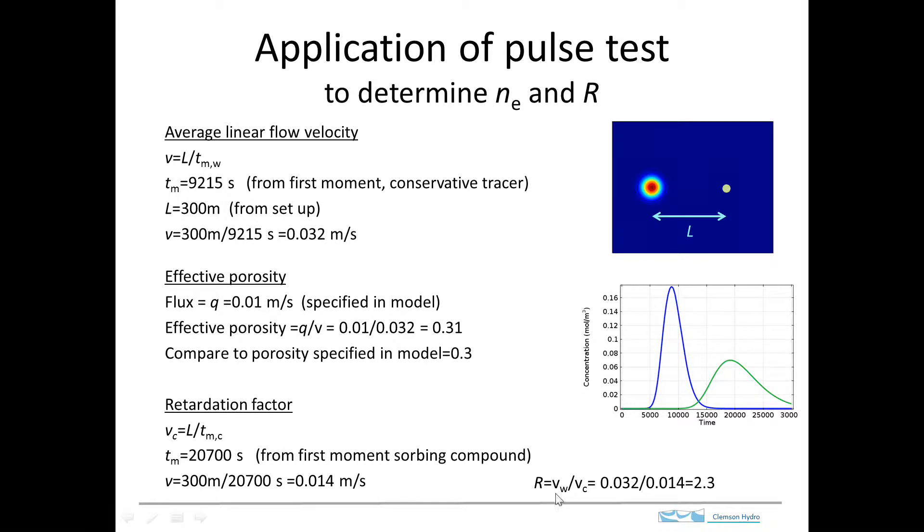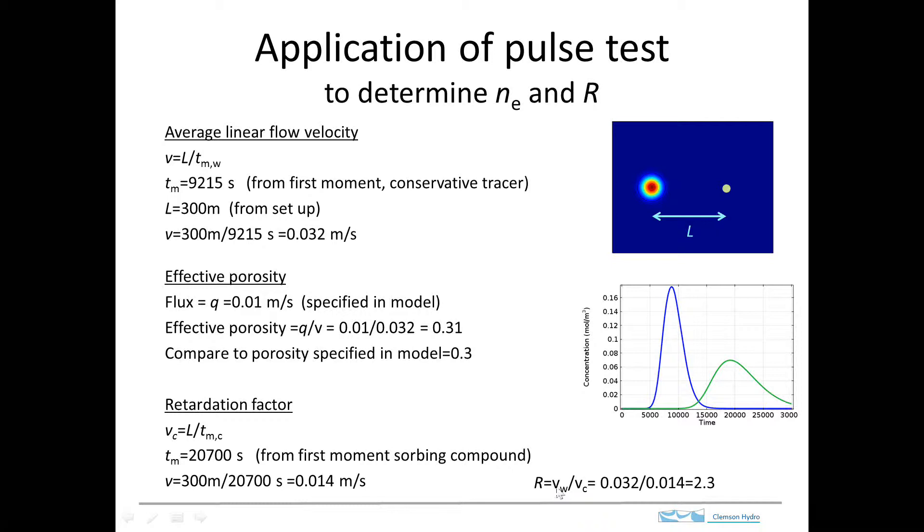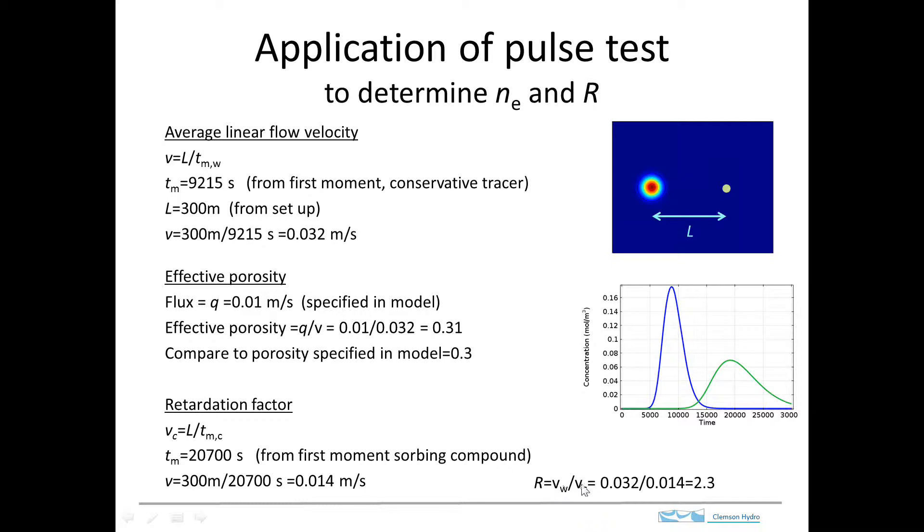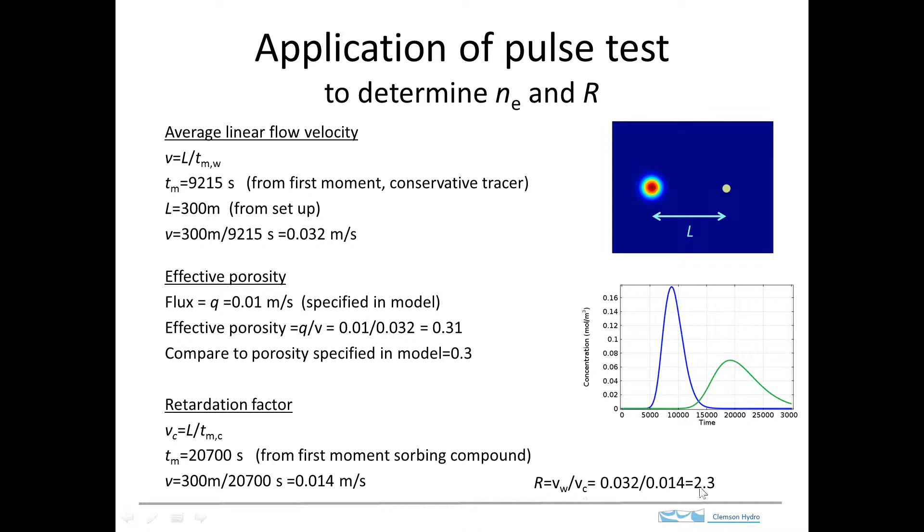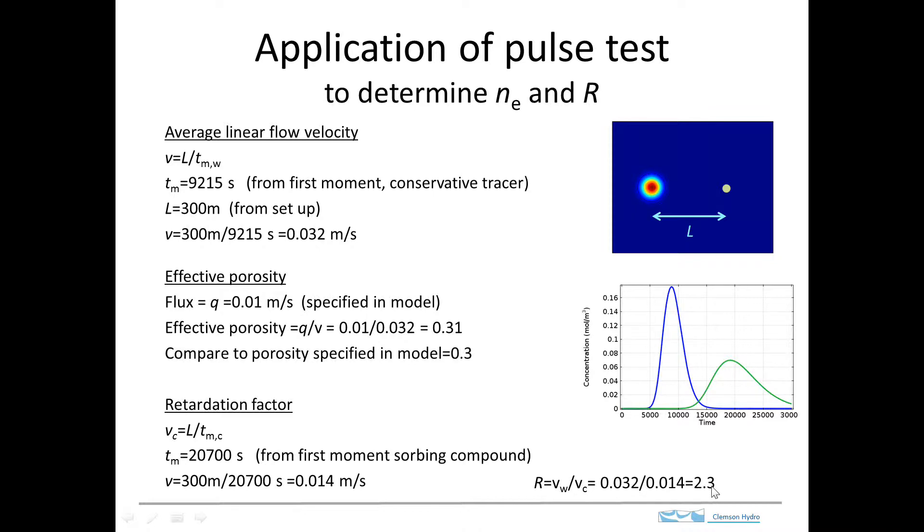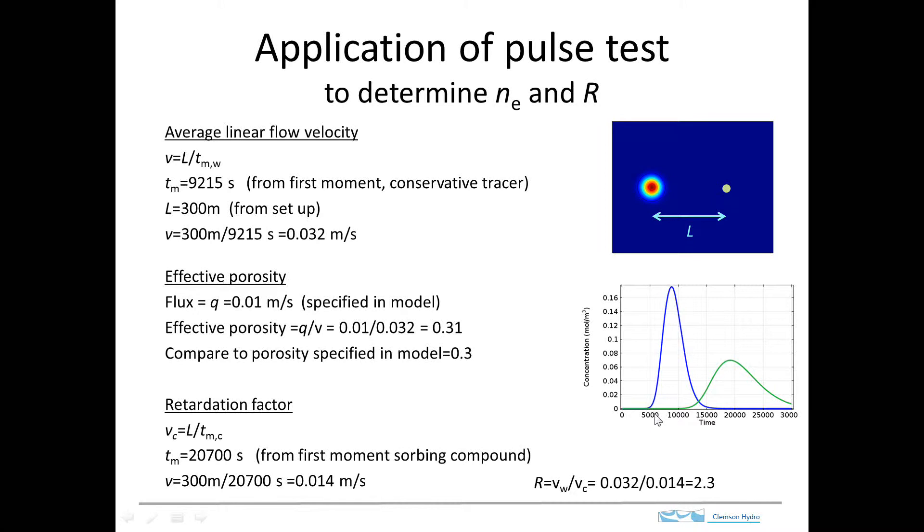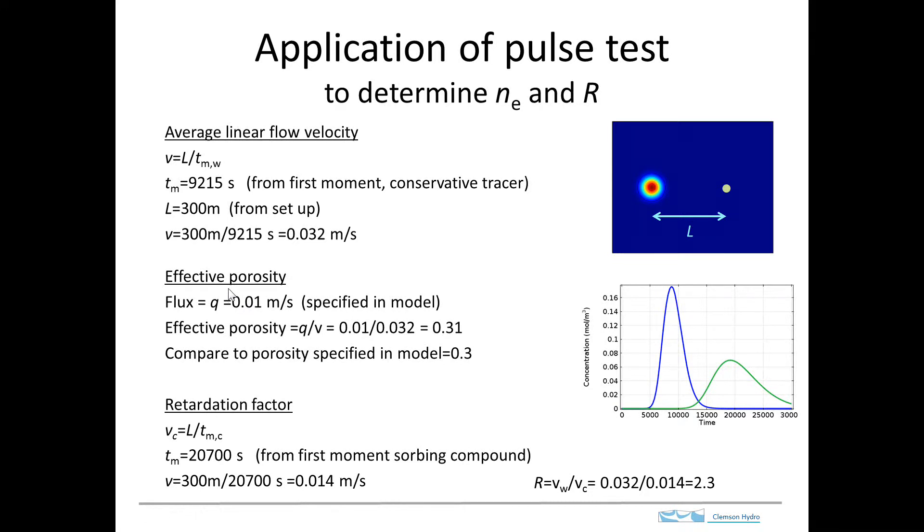And the retardation factor, by definition, is the ratio of the velocity of the water to the velocity of the contaminants. And that gives us a value of 2.3. So this is indeed how these different quantities of retardation factor and the effective porosity are determined in the field.